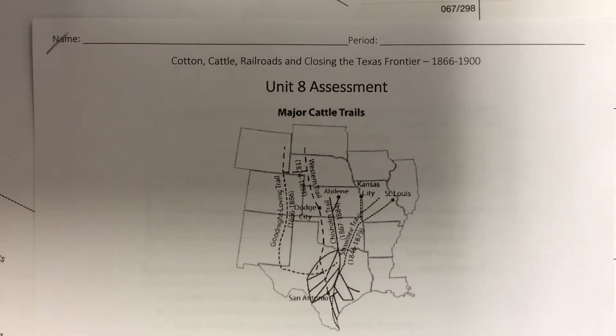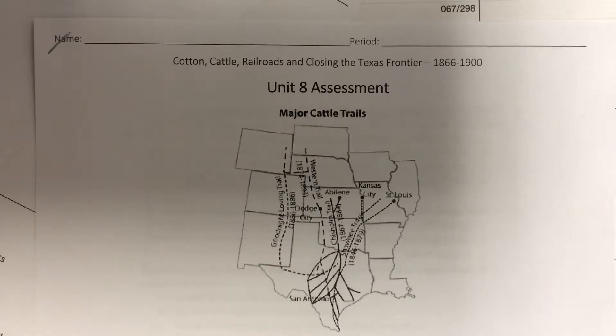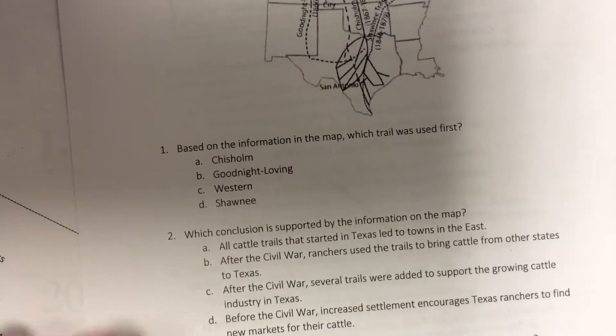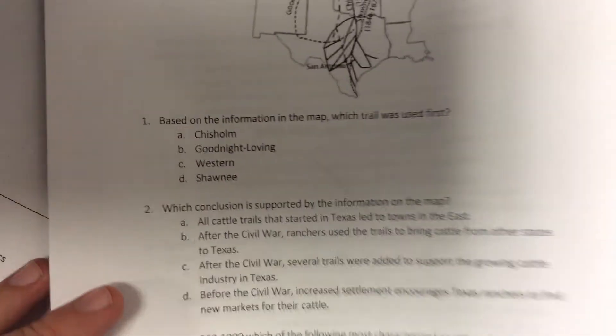Cotton, Cattle, Railroads: Enclosing the Texas Frontier — Unit 8 Assessment.